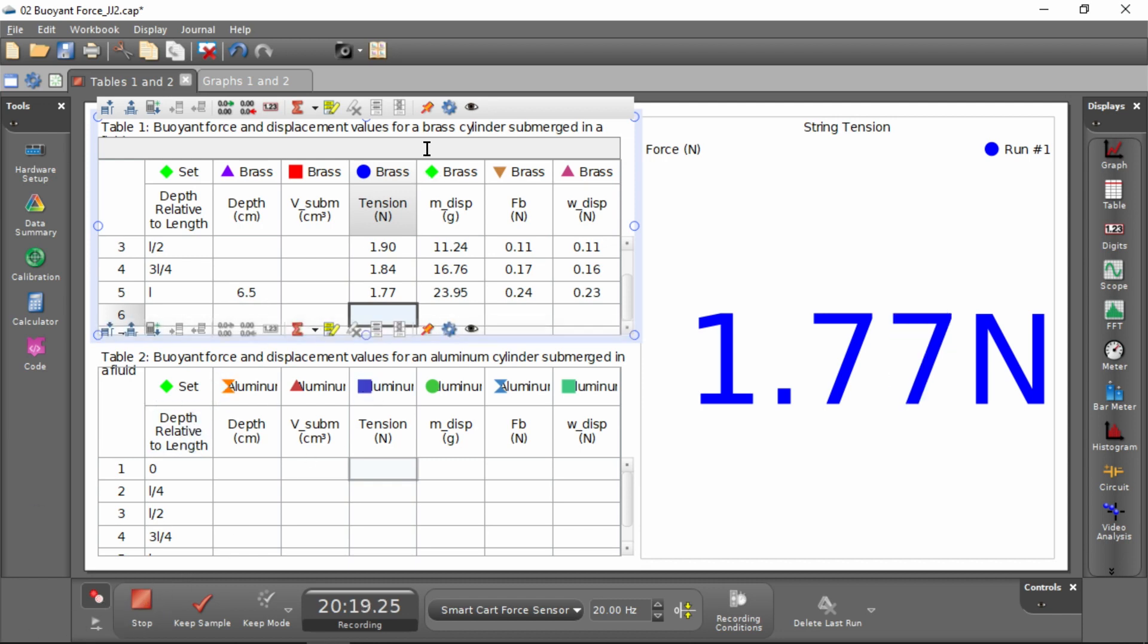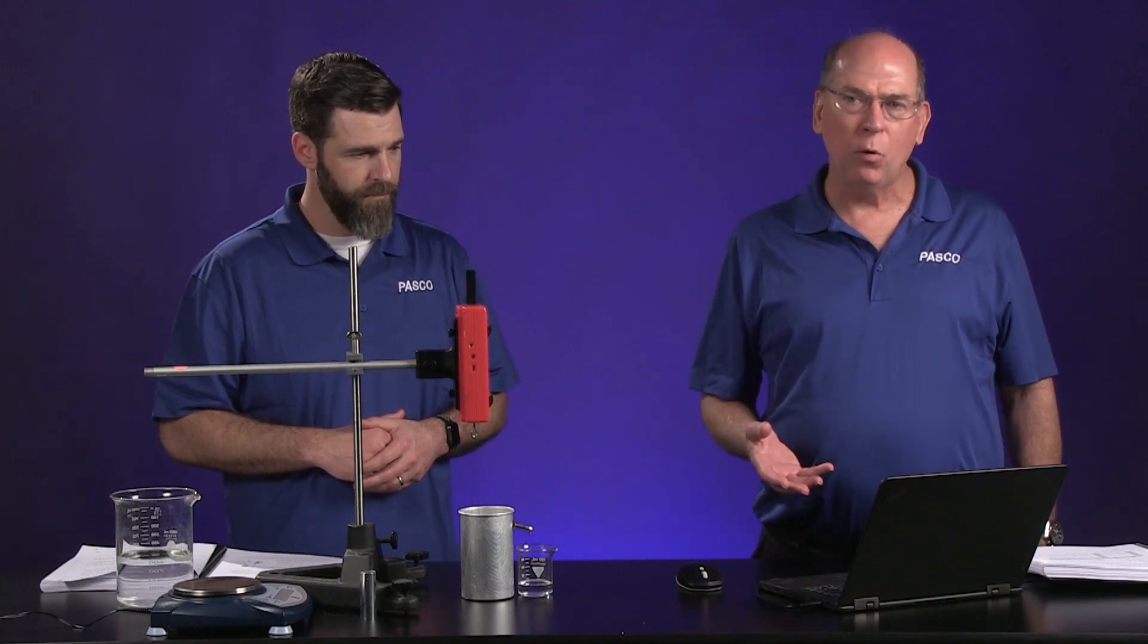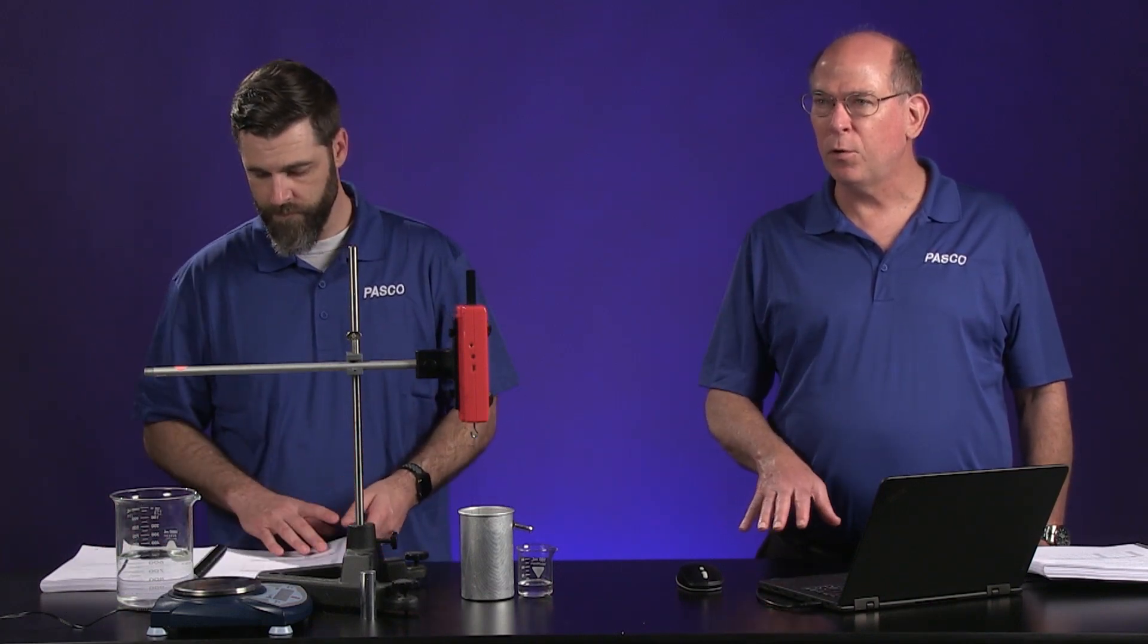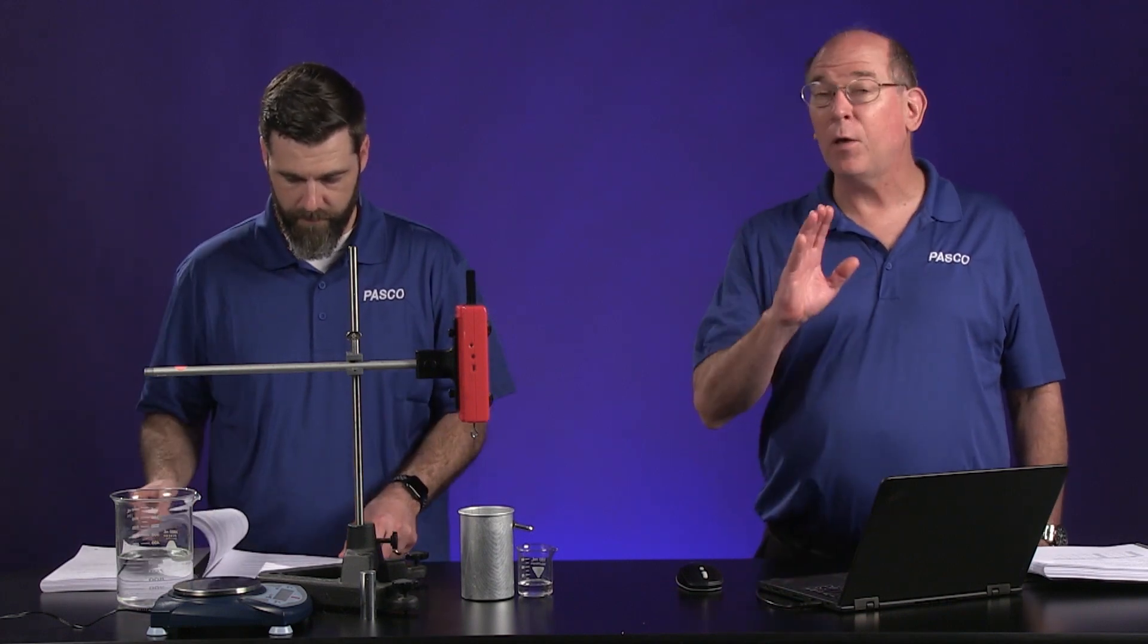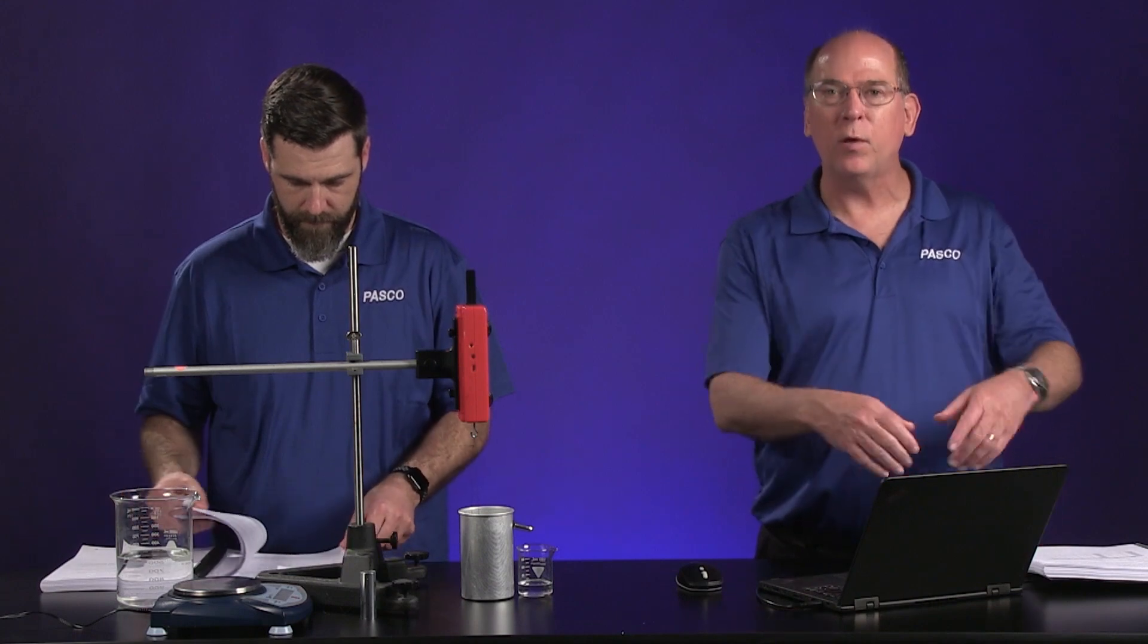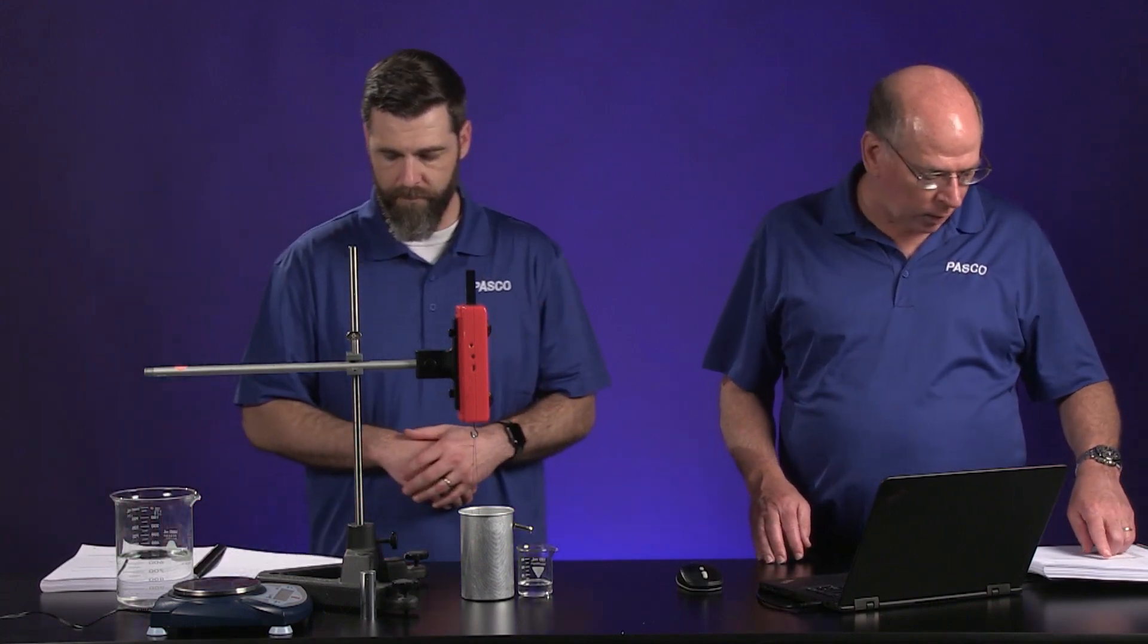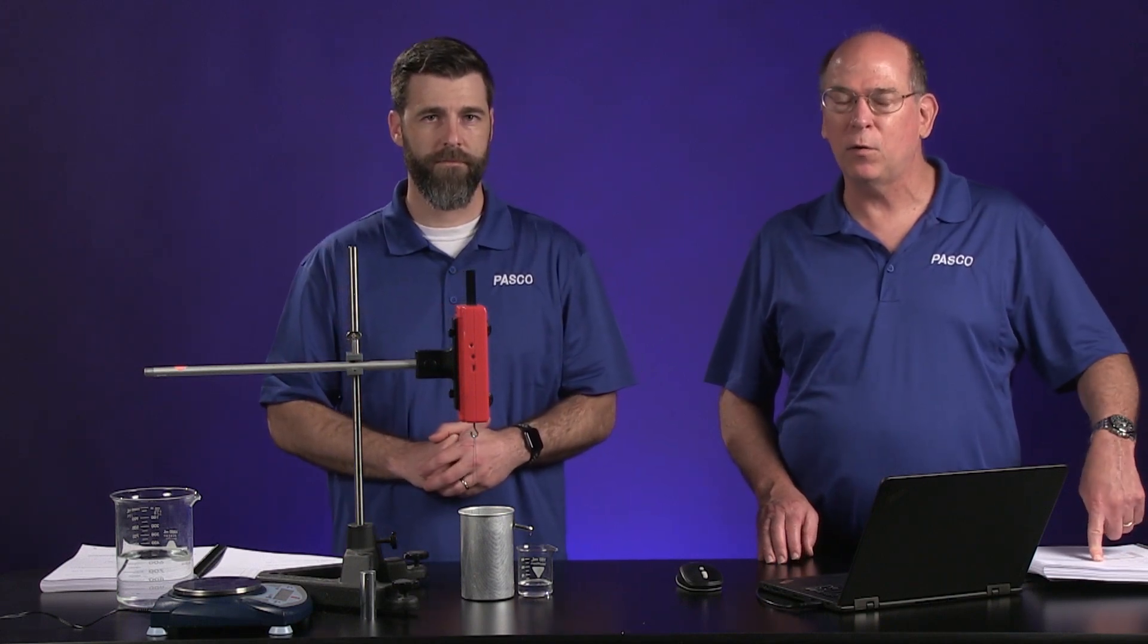So the remaining things in this data table include figuring out the volume that's submerged. Now the entire thing is submerged, and you know its length and it's a cylinder, but you also would need to know the radius. We're going to tell you the radius here—there's not a place in the data table. The radius of the cylinder is 1.17 centimeters, so you need to know that to be able to figure out the volume.